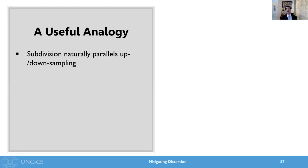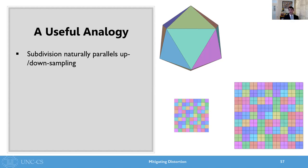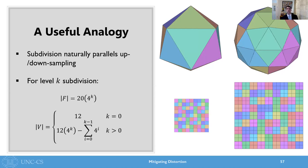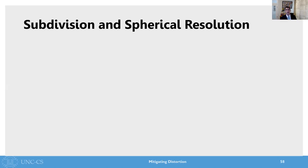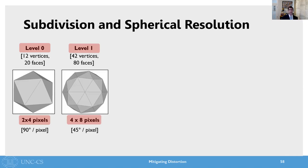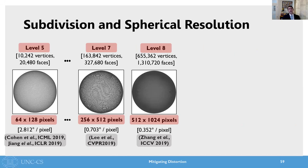All of these works have been based on a useful analogy between subdivision and image up and down sampling. When we upsample an image, each pixel becomes four pixels. When we subdivide the icosahedron, each face becomes four faces. So on the left, you see the equations for the number of faces and vertices for an icosahedron subdivided k times — the key thing to note is this factor of four. We can use this to associate icosahedral representations with an equivalent equirectangular representation. So a level zero icosahedron with no subdivisions would be a two by four pixel equirectangular image. Level one would be four by eight. If we skip ahead, level five would be 64 by 128, and so on and so forth.